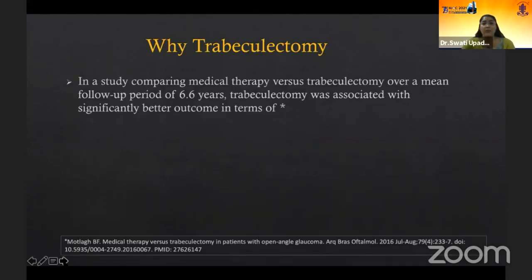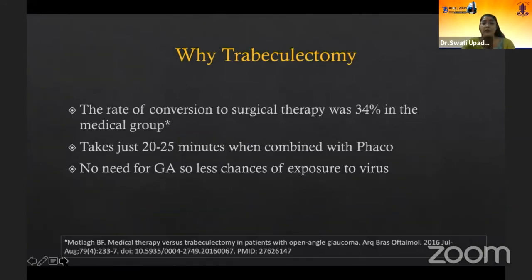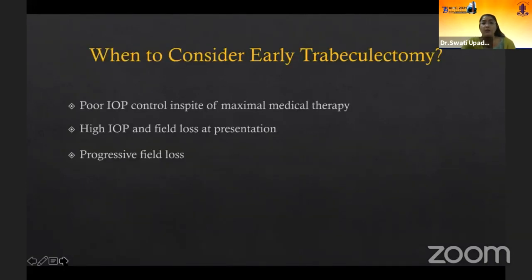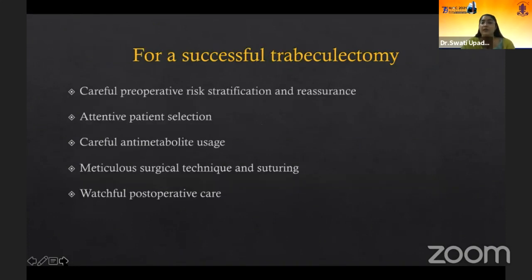In a study by Moghalu et al., comparing trabeculectomy versus medical therapy over 6.6 years, trabeculectomy was associated with significantly better outcomes in terms of vision, visual fields, better BCVA, and number of drugs required. The rate of conversion to surgical therapy in the medical group was 34% — ultimately patients on AGM have to come under the knife. Surgery takes only 20 to 25 minutes when combined with FECO and there is no need for general anesthesia, so less chances of exposure to the virus. Intraoperatively: patient with RT-PCR negative, surface disinfection for sheet and OT table, disposable drapes, patient wearing mask, surgeon wearing double mask, double gloves, and eye shield, avoid communication during surgery, use syringes without cannulas for irrigating to reduce aerosol spread.